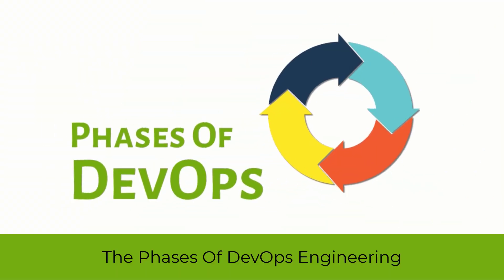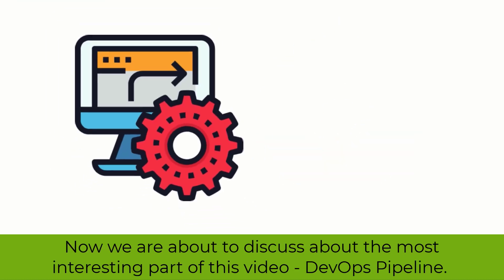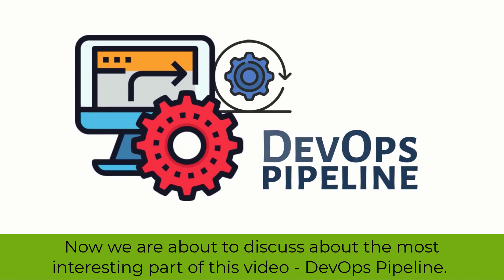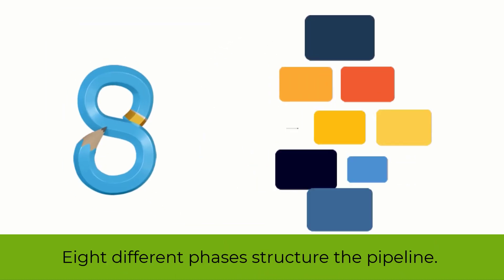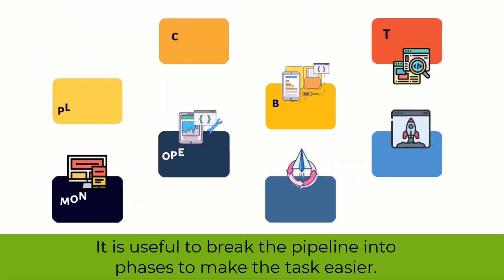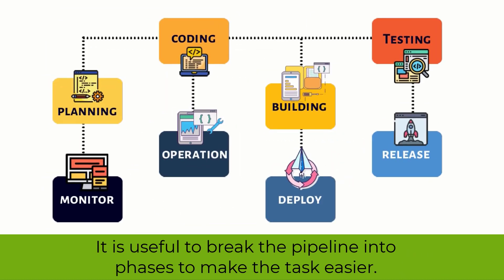The phases of DevOps engineering. Now we are about to discuss the most interesting part of this video: the DevOps pipeline. Eight different phases structure the pipeline. It is useful to break the pipeline into phases to make the task easier.